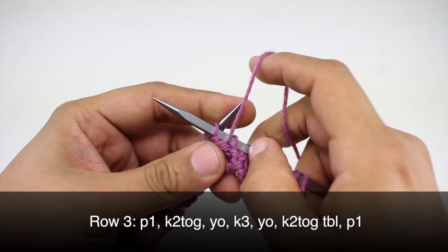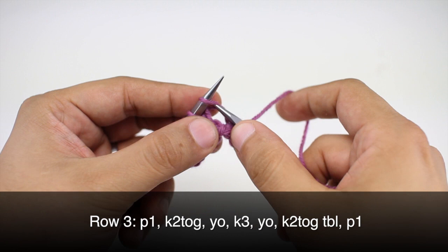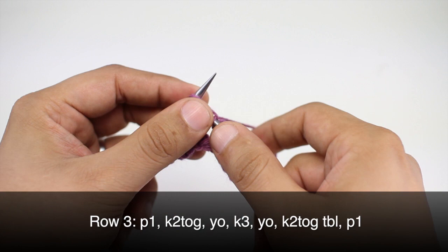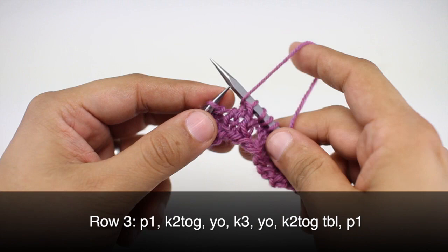Row three: we'll begin by purling one. Then we'll knit two together. Then we will yarn over and knit three. Then we will yarn over again. And we will knit two together through the back loop. And we'll finish up our row by purling one.